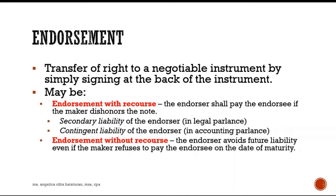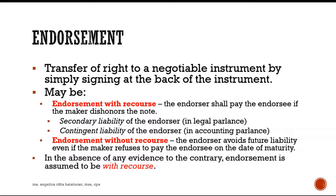If the endorsement is without recourse, the endorser — B in our example — has no liability to the bank if A the maker does not pay. Without recourse means B has no obligation in case A fails to pay the bank. In the absence of any specification in the problem as to whether it is with recourse or without recourse, we will treat the endorsement as with recourse — meaning there is a liability on the part of the endorser if the maker fails or refuses to pay the bank.